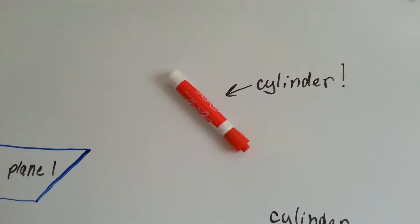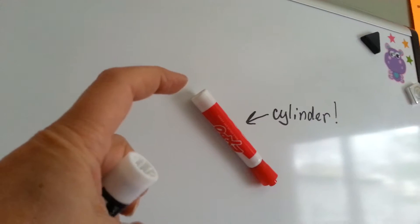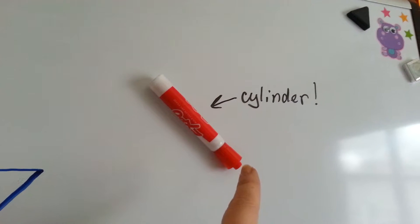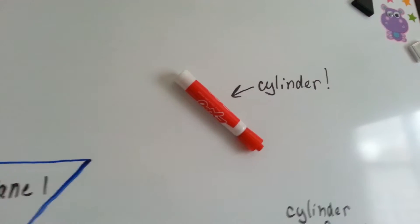So now I got a bunch of cylinders to show you. My dry erase marker is a cylinder. It's got a base over here and a base over here, even though that one's got kind of a nub because of the cap, and it's got a circumference and a height.